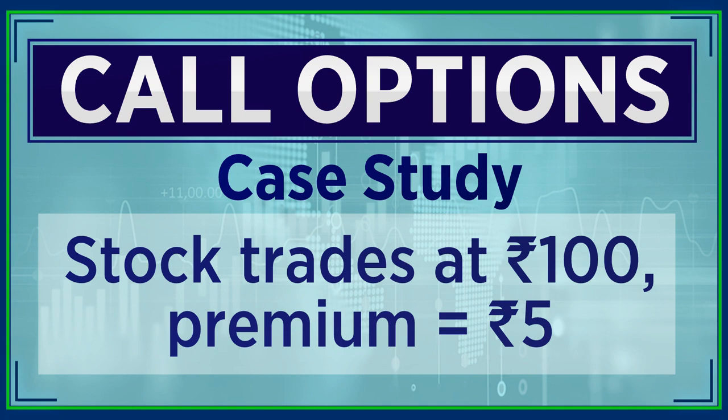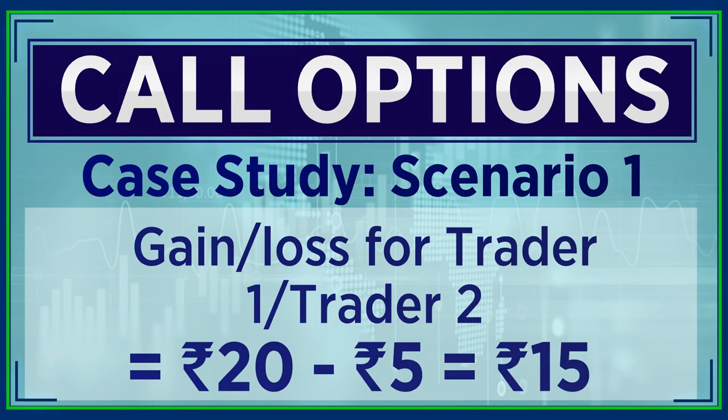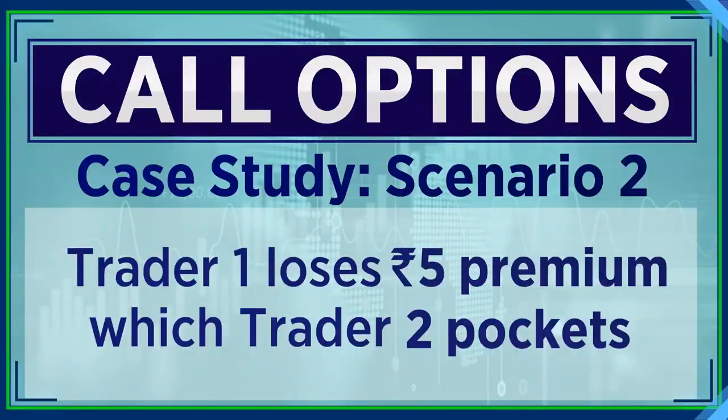In the first scenario, the gain for the option buyer reduces from 20 rupees to 15 rupees, and obviously the loss for the option seller is also 15 rupees. In the second case, when the stock goes to 80, the option buyer still loses — that 5 rupees premium that he has paid — and the option seller ends up making that 5 rupees.